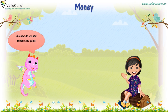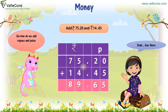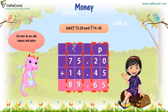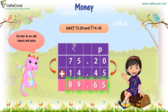Jiya, how do we add rupees and paise? Let's see. Add rupees 75 and 20 paise and 14 rupees and 45 paise. We place paise under the paise column and rupees under the rupees column. Then start adding from paise: 0 plus 5 paise is equal to 5, and 2 plus 4 paise is equal to 6 paise. Now adding rupees: 5 plus 4 is equal to 9 and 7 plus 1 is equal to 8. So the answer is 89 rupees 65 paise.